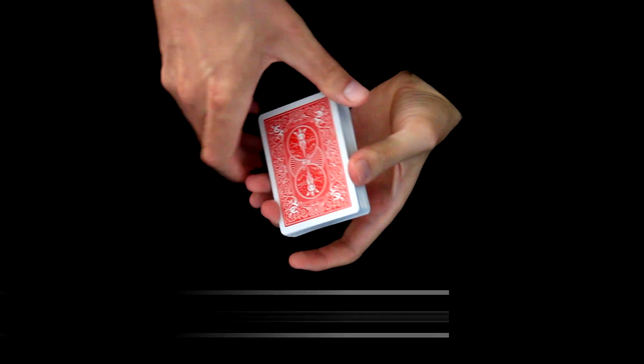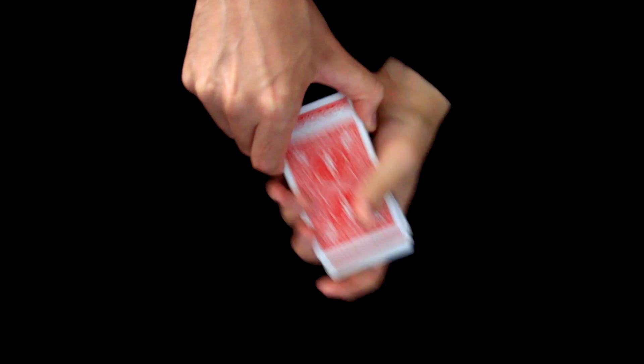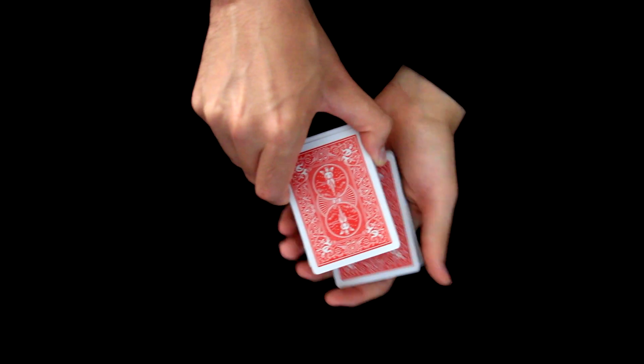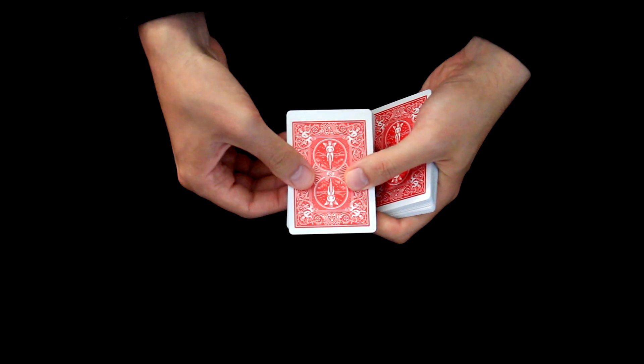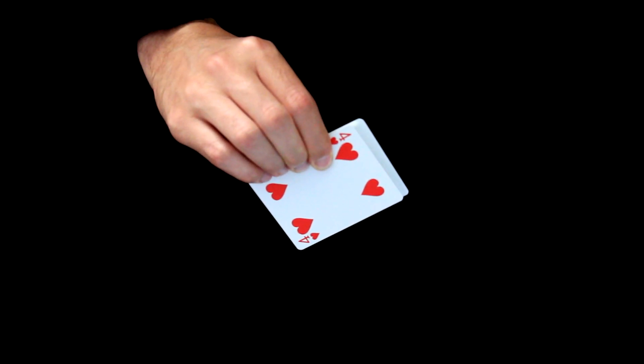For this trick we need a spectator to select a card. We will ask him to say stop any time he wants. For example, he might say stop here. We will show him his selection and he will remember it. I will show it also on camera.